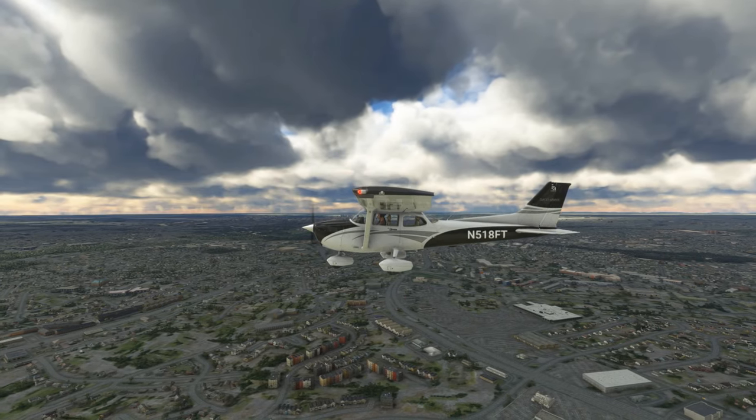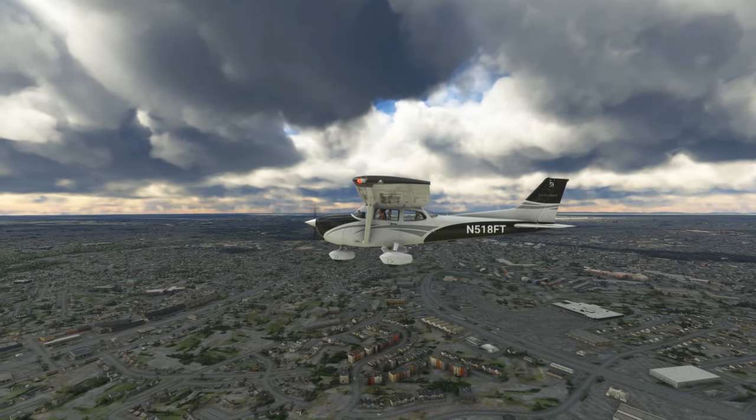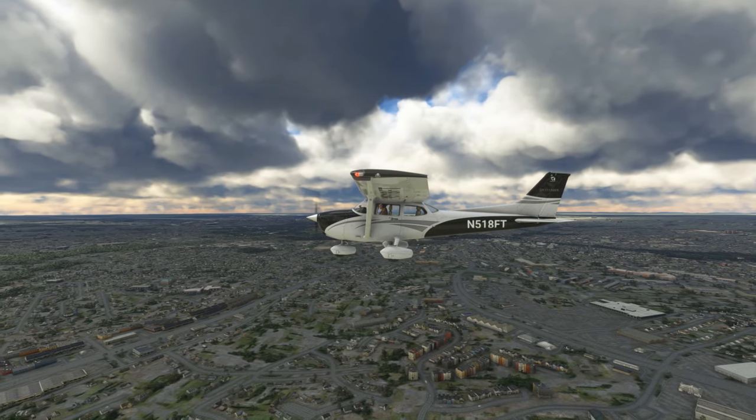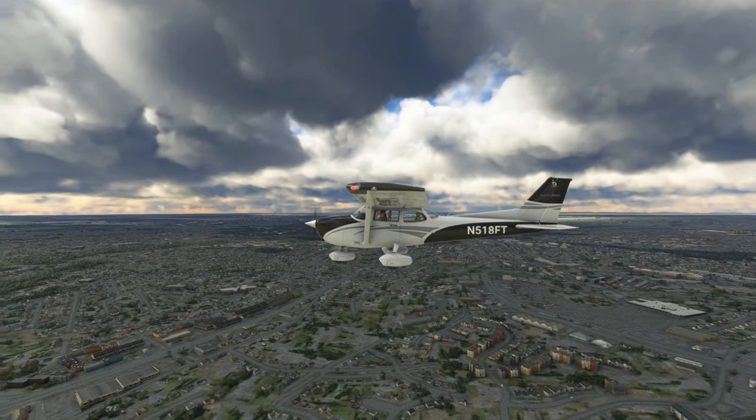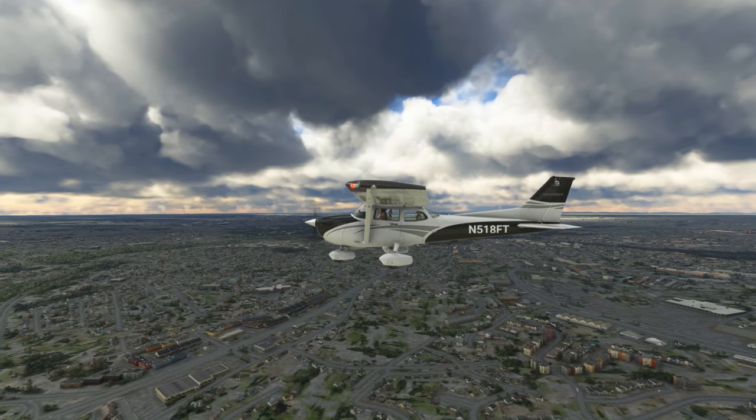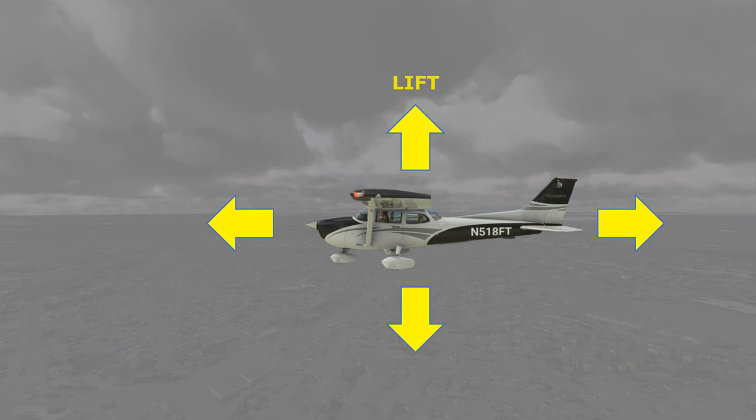One of the first lessons we learn in private pilot ground school is that an aircraft at a constant speed and level altitude is in equilibrium with respect to the four forces of flight. That is, lift equals weight and thrust equals drag.